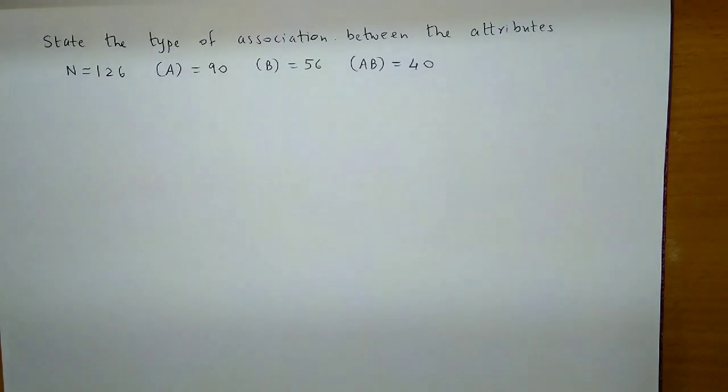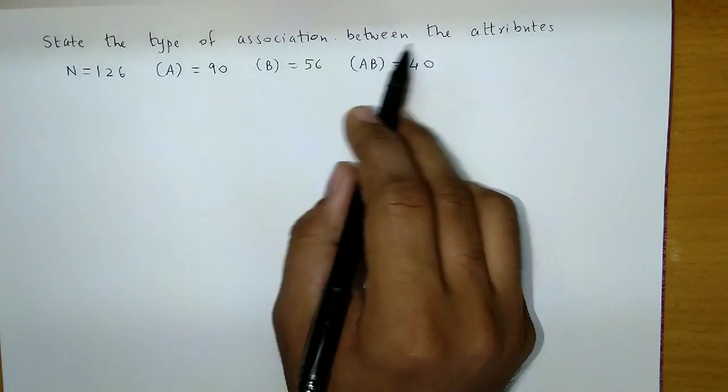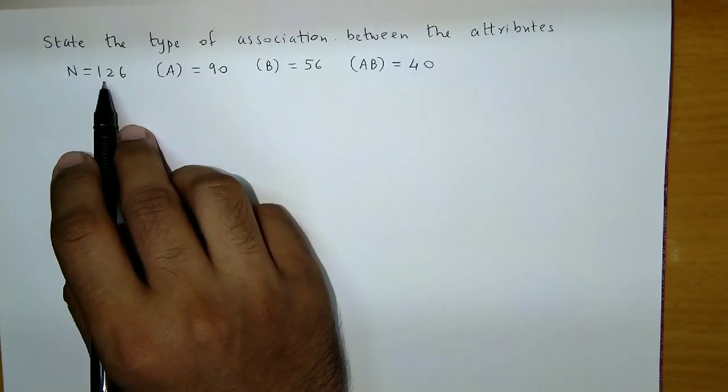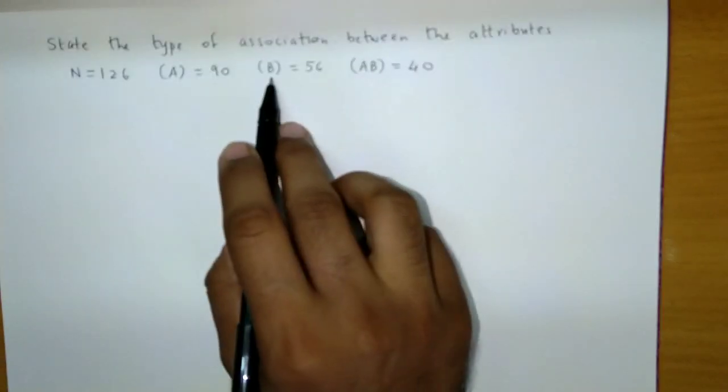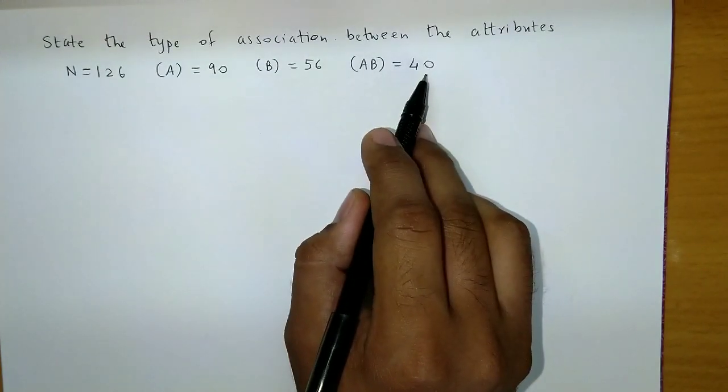Okay, now let's take an example to study the type of association between the attributes. The question is, state the type of association between the attributes. The frequency of N is 126, the frequency of A is 90, the frequency of B is 56, the frequency of AB is 40.